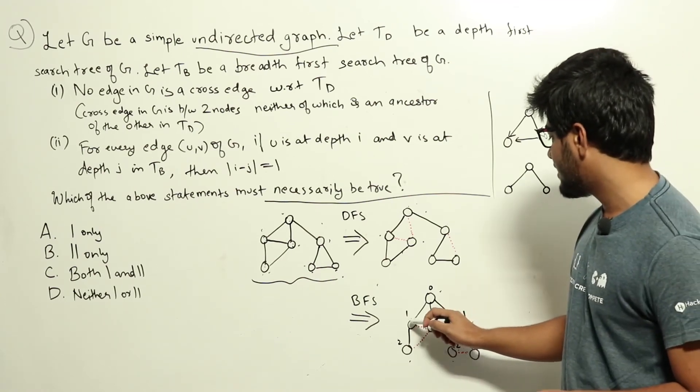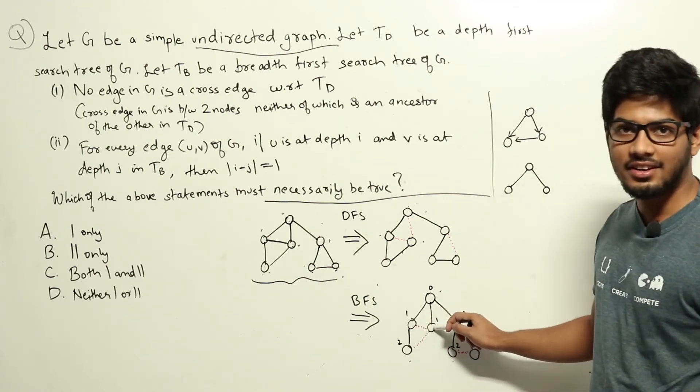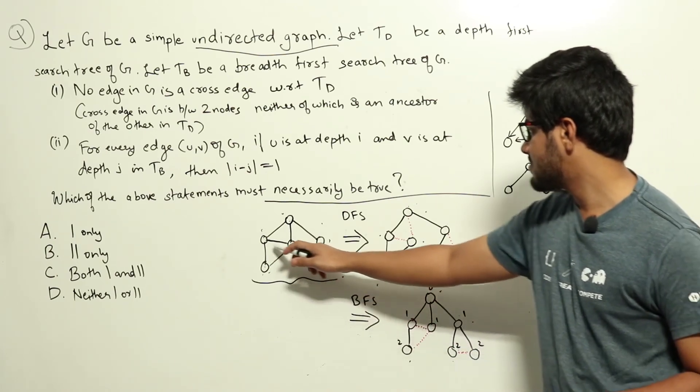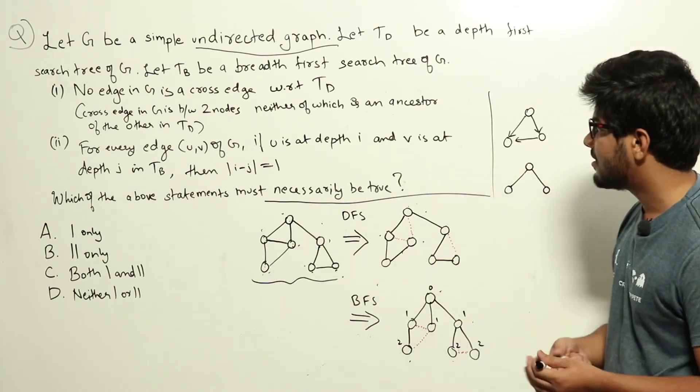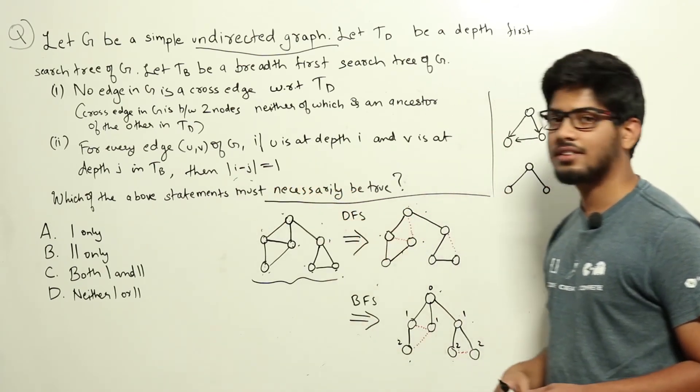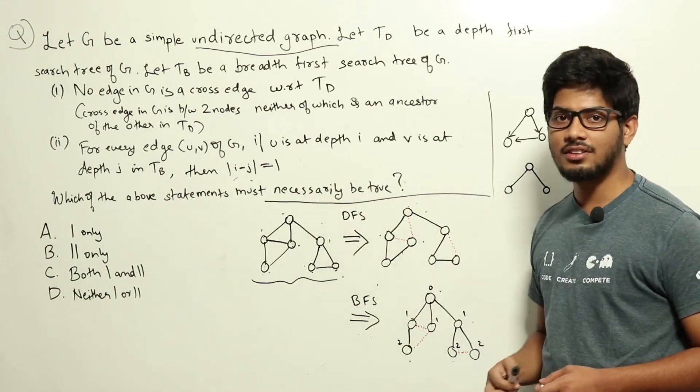And clearly you can see that this node and this node is at depth 1 here. And there is an edge in graph G, this one, which is not in this. But i and j is 1 in this example. The difference is 0. It is not equal to 1. So this statement is false.